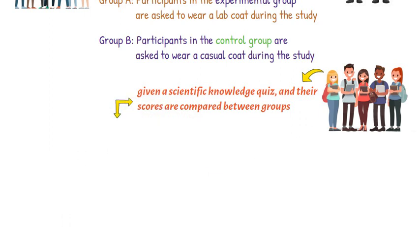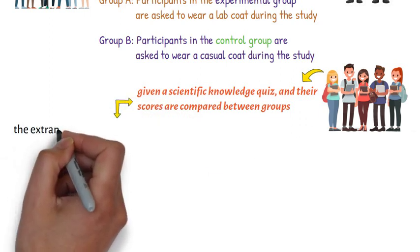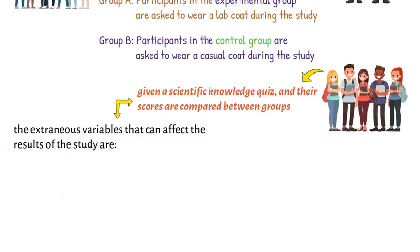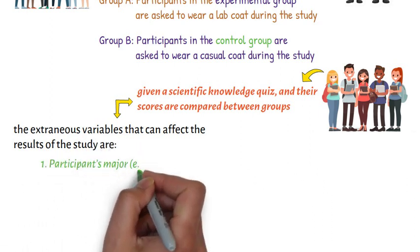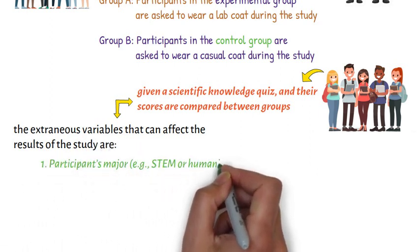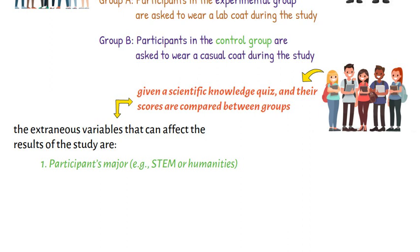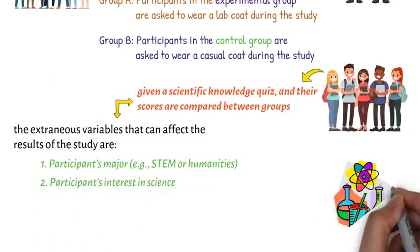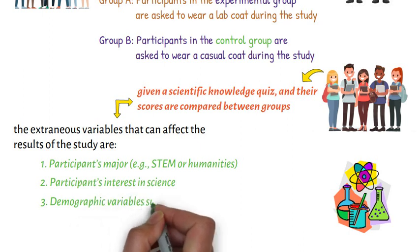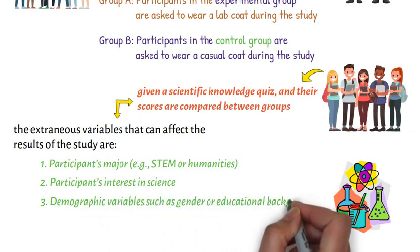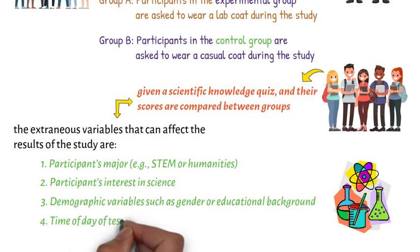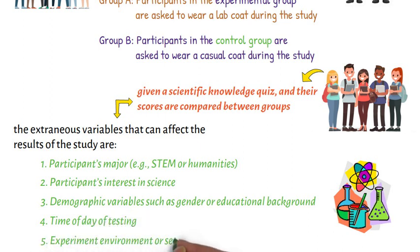In this study, the extraneous variables that can affect the results are: one, participants' major, for example, STEM or humanities; two, participants' interest in science; three, demographic variables such as gender or educational background; four, time of day of testing; and five, experiment environment or setting.